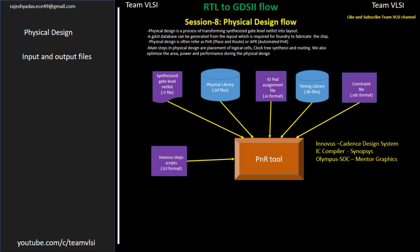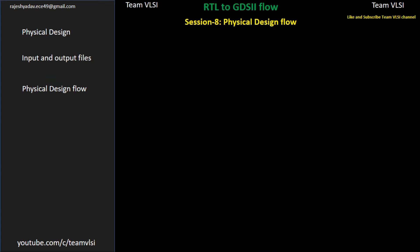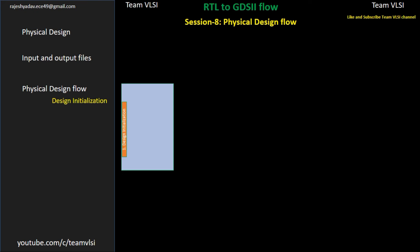Now we are ready to do the PNR flow. After doing the PNR, we will get a GDS2 file, which is the final output of our IC design flow. Let's now see the steps in a bit more detail. The very first step of physical design is design initialization. Inside design initialization, we do the design import, then create and load the floor plan, and then set the timing mode setups. Inside the timing mode setups, we set a lot of timing libraries for multi-mode, multi-corner setups.